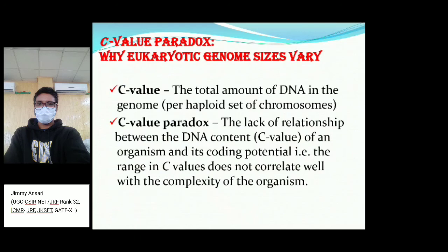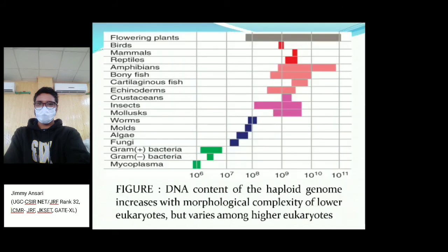Moving to another topic: the C-value paradox and why eukaryotic genome size varies. The C-value is the total amount of DNA within a haploid genome. The C-value paradox occurs in higher organisms where there is a lack of relationship between the amount of DNA in an organism and its coding potential or complexity. The range in C-values does not correlate with the organismal complexity.